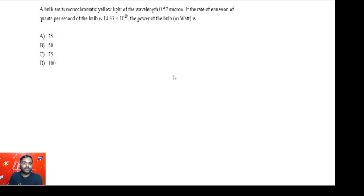The next question is from structure of atom. A bulb emits monochromatic yellow light of the wavelength 0.57 micron. If the rate of emission of quanta per second of the bulb is 14.33 times 10 to the power 19, the power of the bulb in watt is? This is quite a simple question.